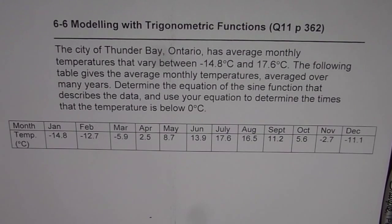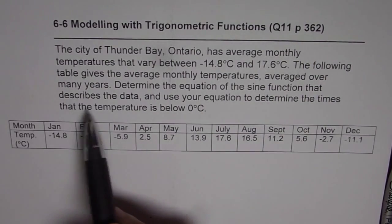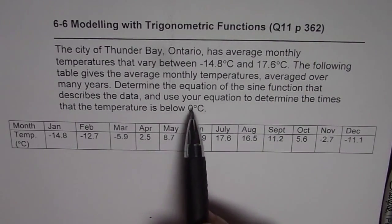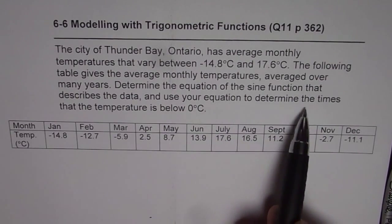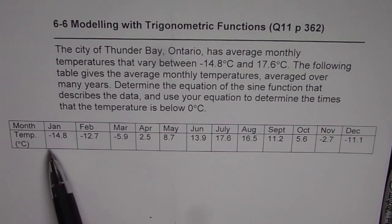has average monthly temperatures that vary between minus 14.8 degrees centigrade and 17.6 degrees centigrade. The following table gives the average monthly temperatures, averaged over many years, determine the equation of the sine function that describes the data, and use your equation to determine the times that the temperature is below 0 degree centigrade. So that is the